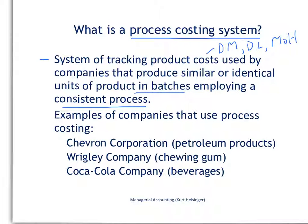What are some examples of products that would be likely to use a process costing system? We've got three here. First, petroleum products — things like gas that are manufactured in high volume and at relatively low cost.